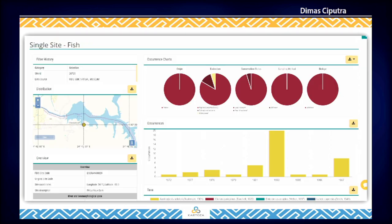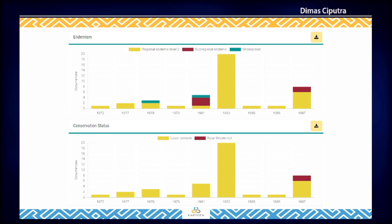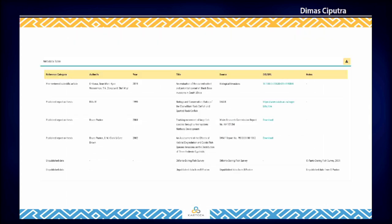There's also a single site dashboard. The summary data are displayed by charts showing the proportion of taxa in its origin, endemism, and conservation status, occurrences over time, and also the endemism chart and conservation status chart. In addition, metadata associated with occurrence records are provided. All of this data is downloadable as CSV and also as SVG files.